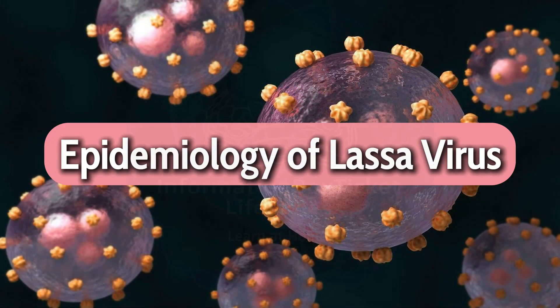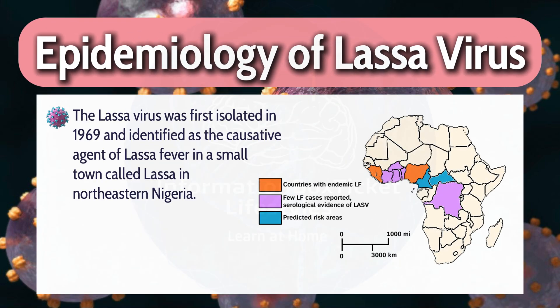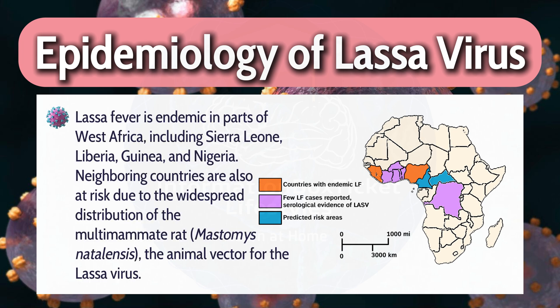Epidemiology of Lassa Virus. The Lassa virus was first isolated in 1969 and identified as the causative agent of Lassa fever in a small town called Lassa in northeastern Nigeria. Lassa fever is endemic in parts of West Africa, including Sierra Leone, Liberia, Guinea, and Nigeria. Neighboring countries are also at risk due to the widespread distribution of the multi-mammate rat, Mastomys natalensis, the animal vector for the Lassa virus.